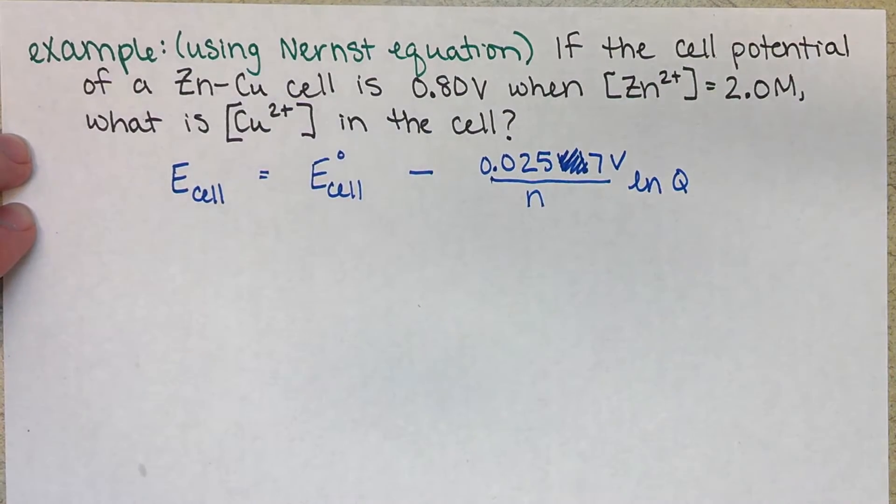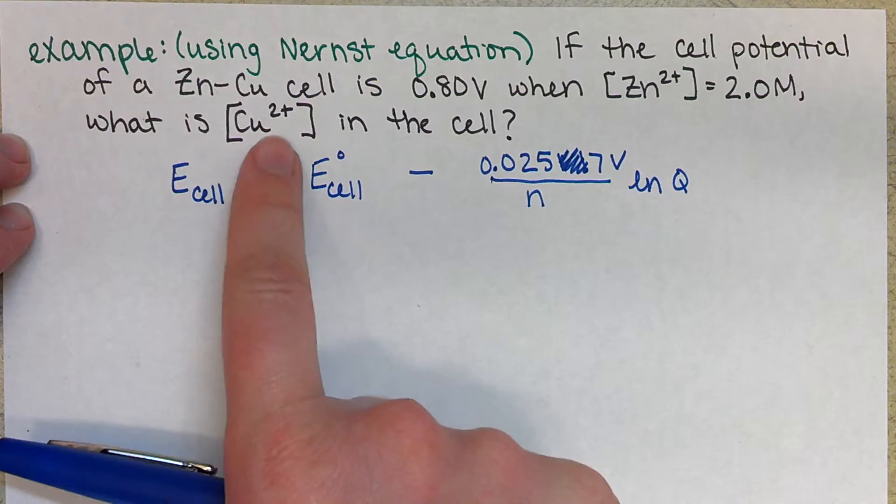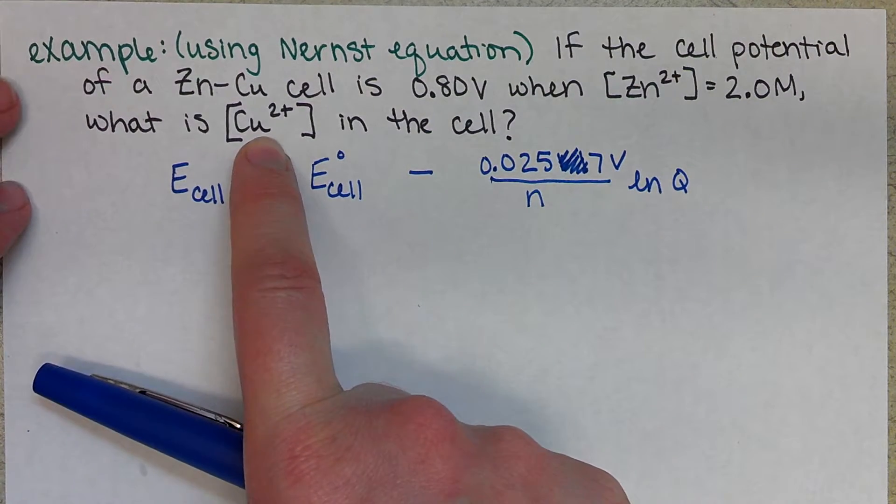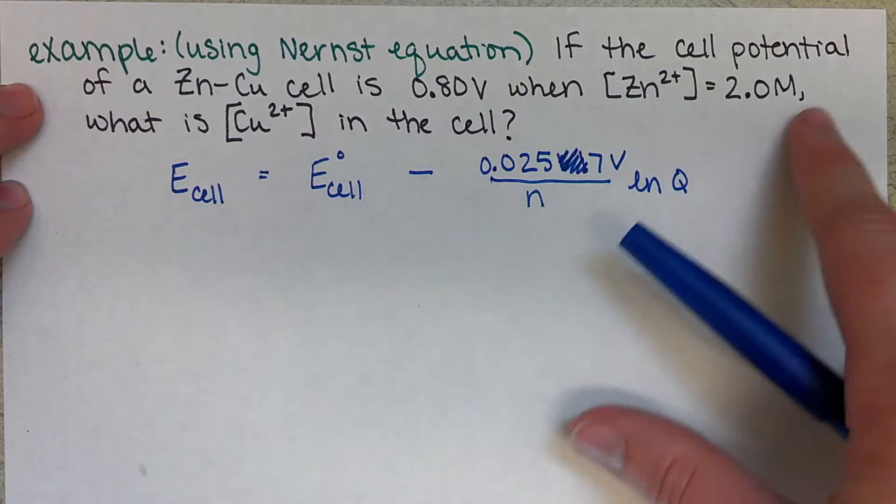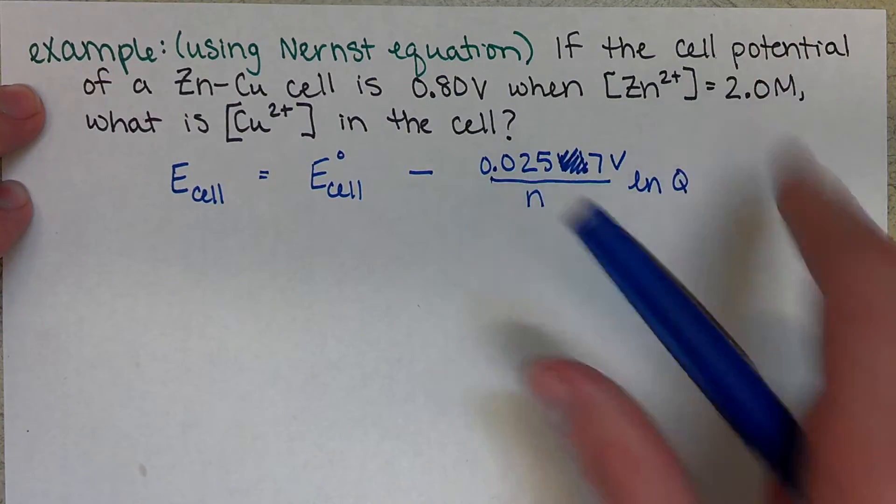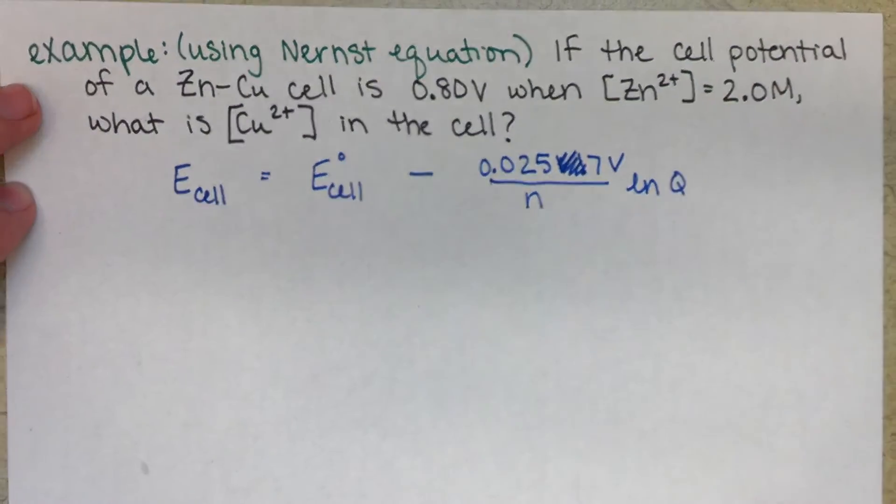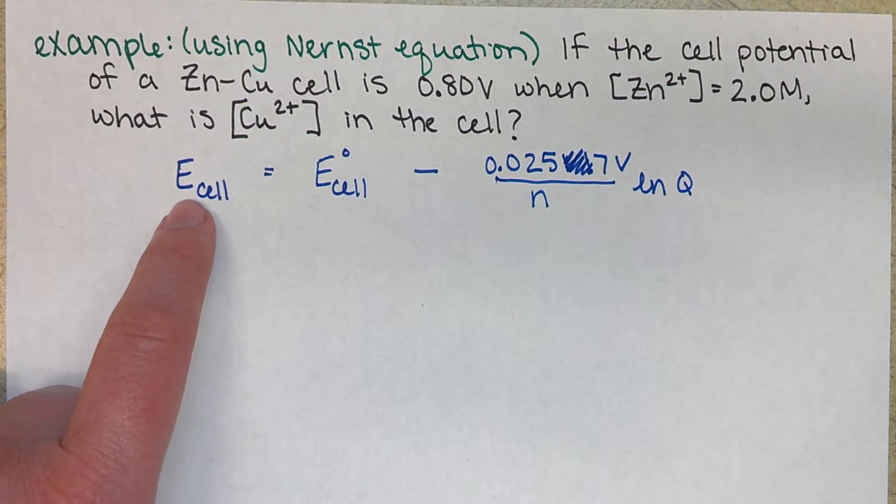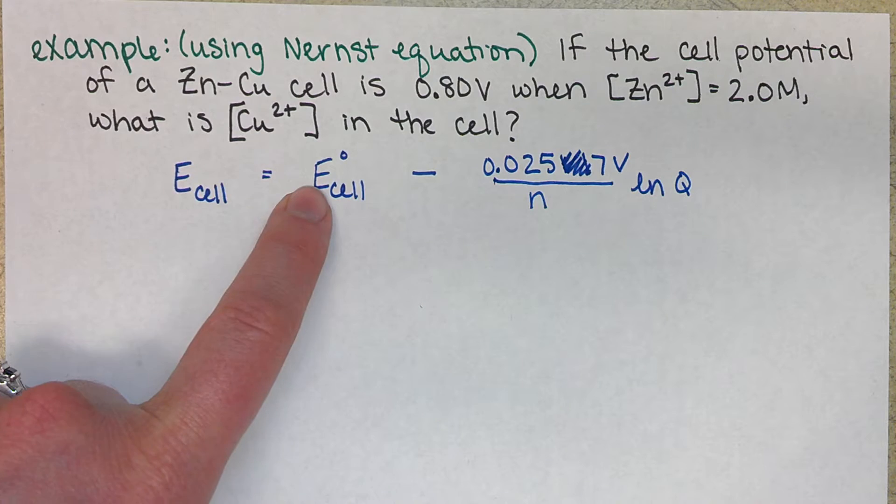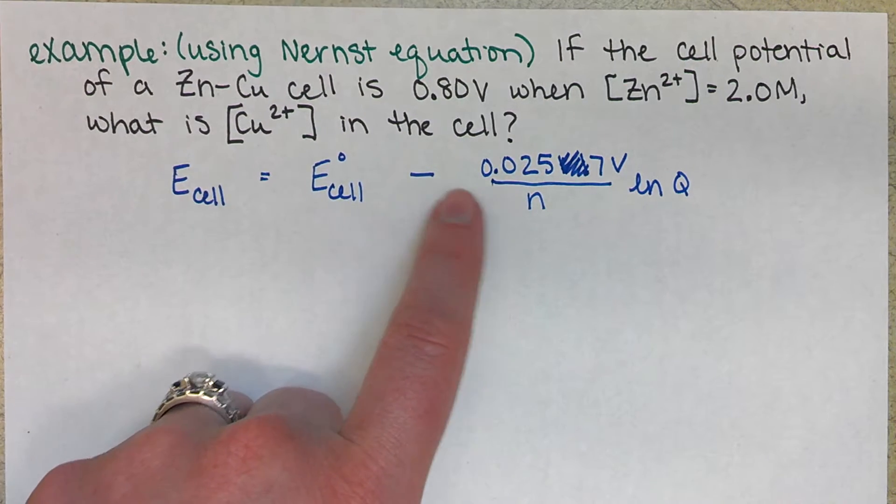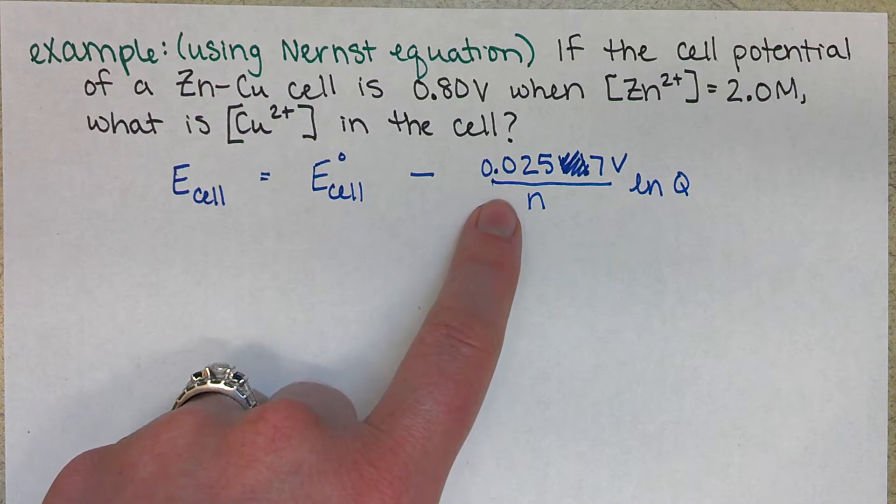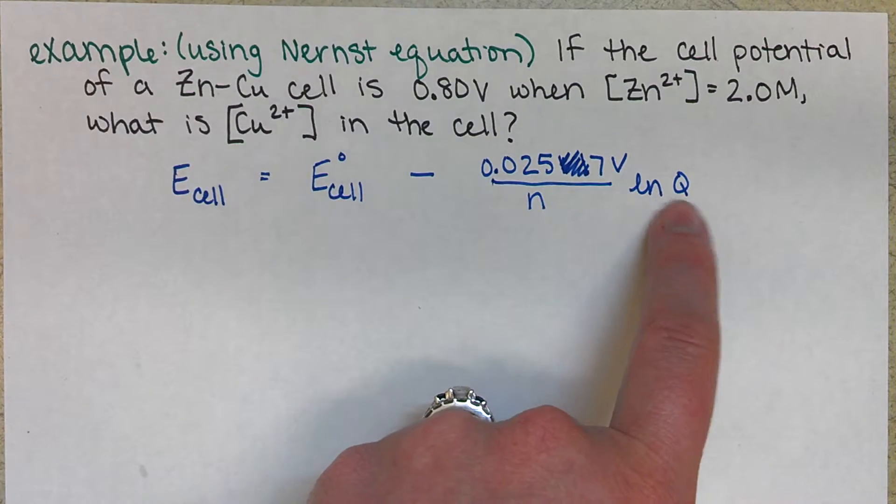Ok, so we are looking at calculating our copper-ion concentration in our zinc-copper cell. When we see that 2.0 molar, we want to be thinking Nernst equation. So we have E-cell non-standard is equal to E-cell standard minus 0.0257 volts divided by N natural log of Q.